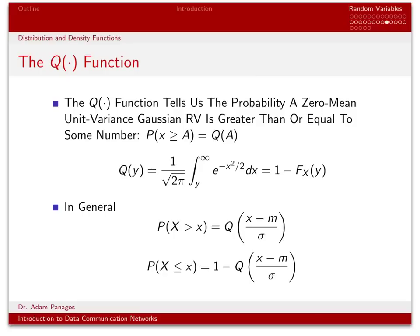The Q function is also useful for other Gaussian random variables. If you're dealing with a Gaussian random variable with mean m and standard deviation sigma, the probability that it's greater than some value x is Q of (x minus m) divided by sigma. For example, with mean 4 and standard deviation 2, the probability of exceeding 7 is Q of (7 minus 4) divided by 2.